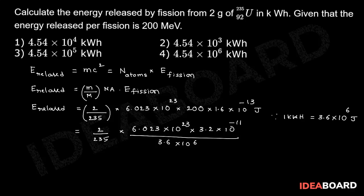Now the value comes to kilowatt hours. Thereby energy released is equal to 4.54 into 10 power 4 kWh. So the first option is the right option. Thank you.